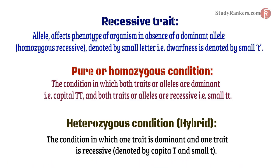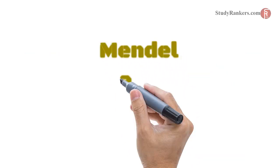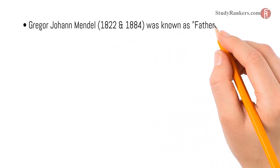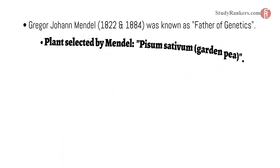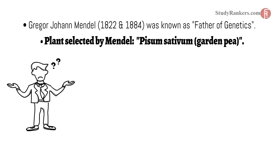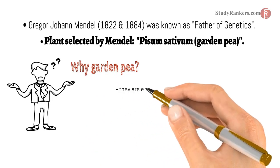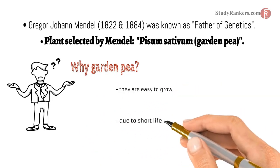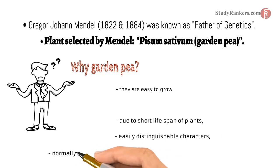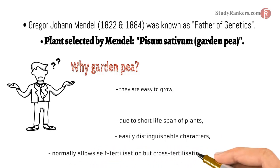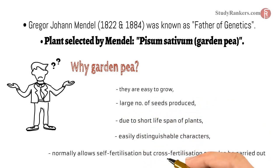Our next topic is Mendel and his work on inheritance. Gregor John Mendel was known as the father of genetics. The plant selected by Mendel was Pisum sativum, the garden pea. Why garden pea? Because they are easy to grow due to short life span, have easily distinguishable characters, normally allow self-fertilization but cross-fertilization can also be carried out, and produce a large number of seeds.